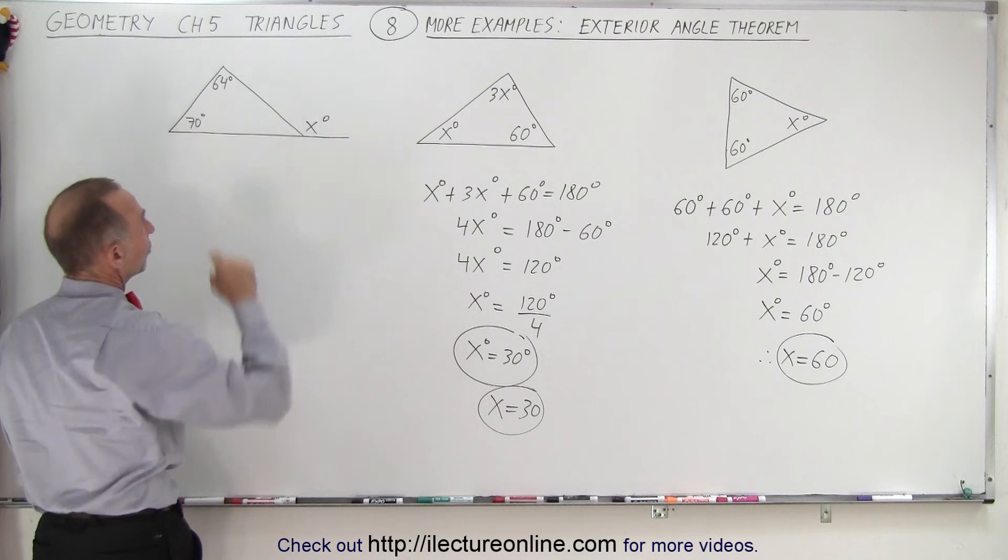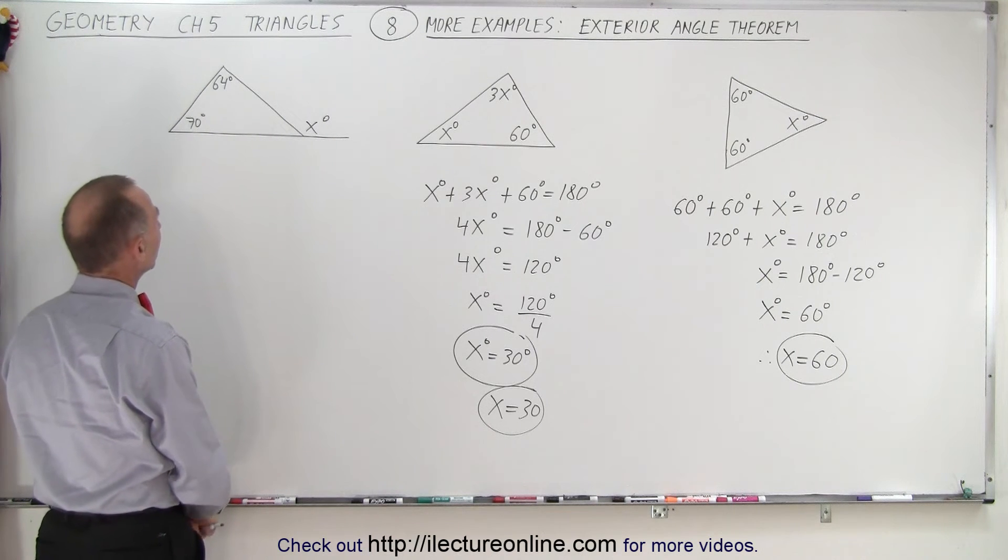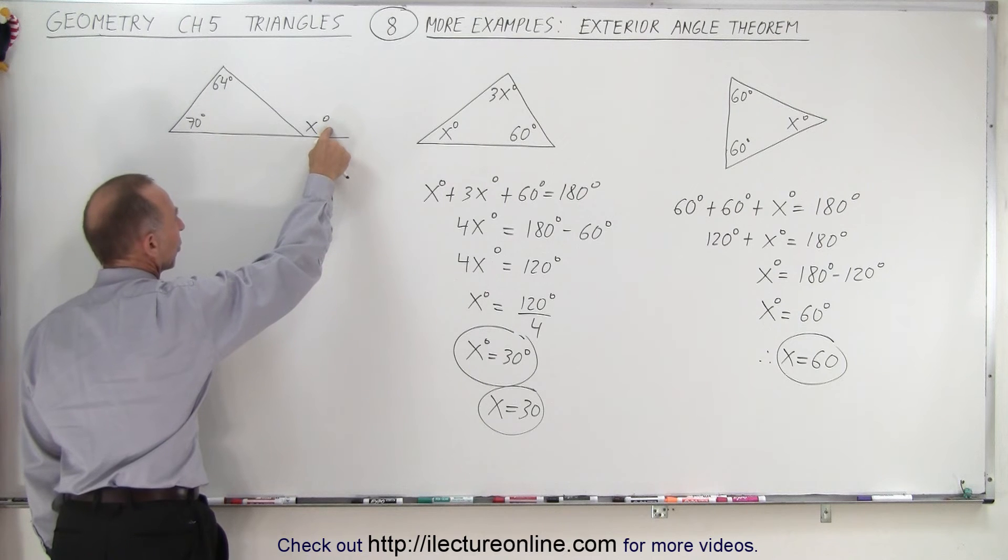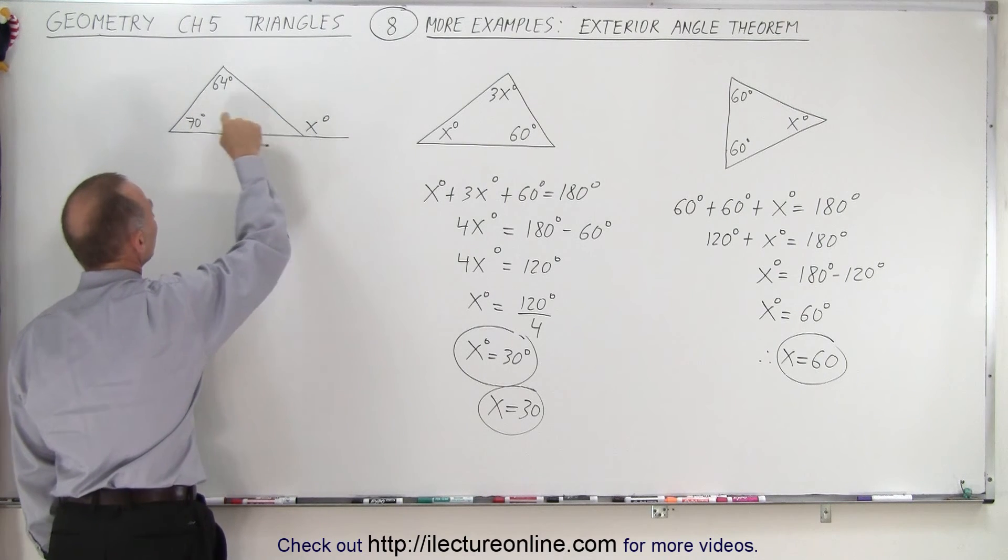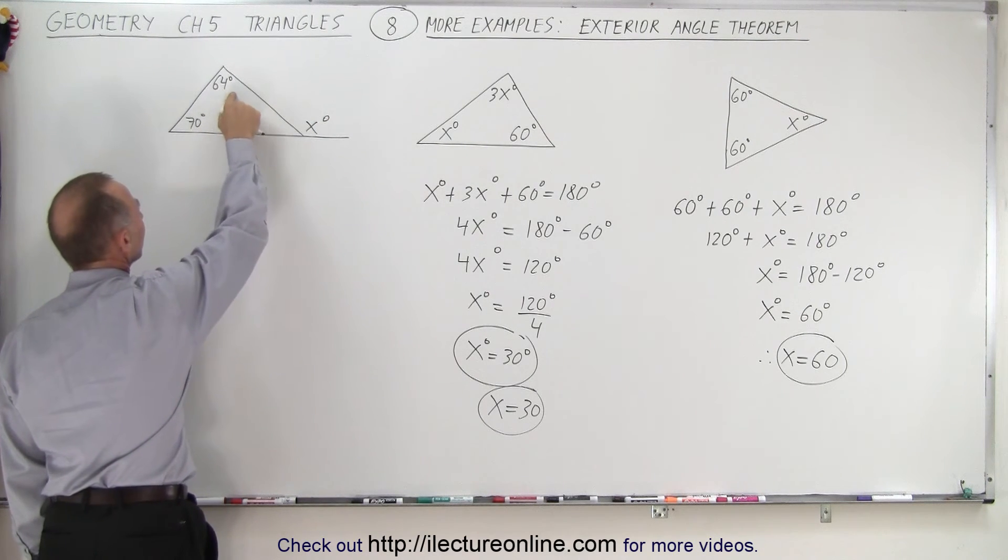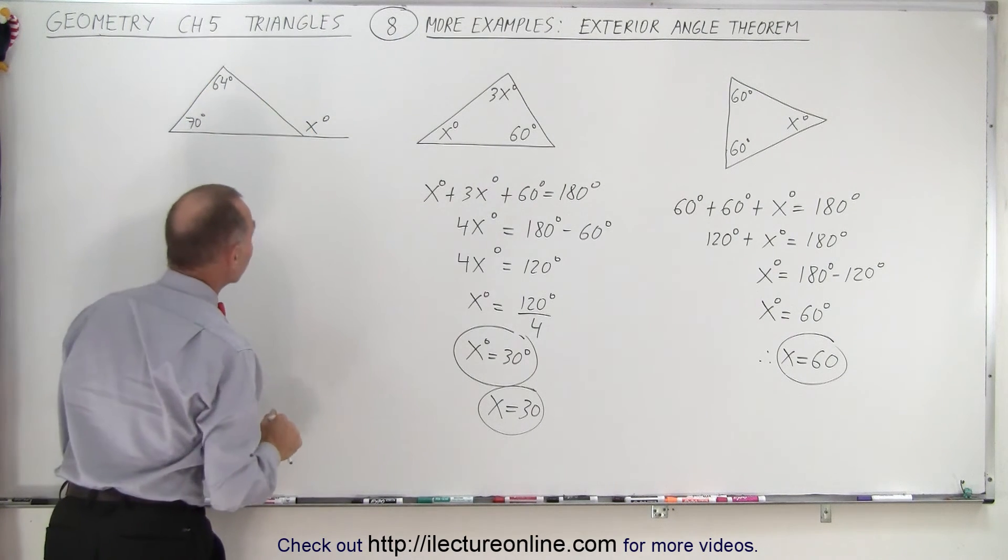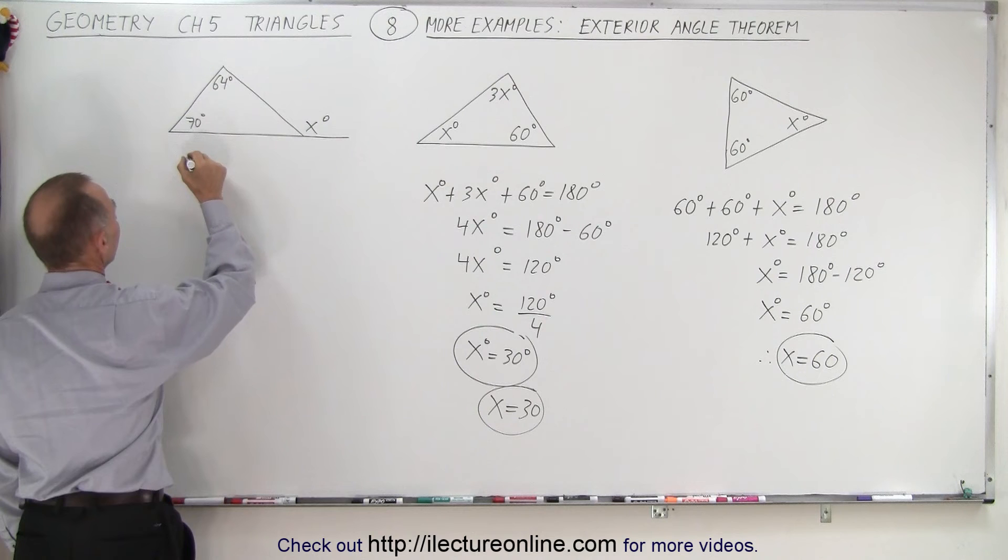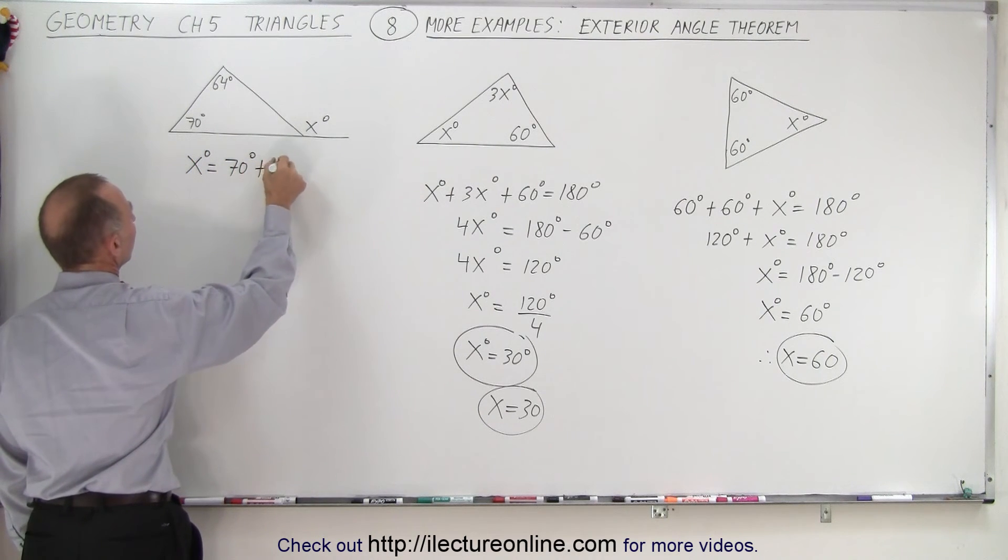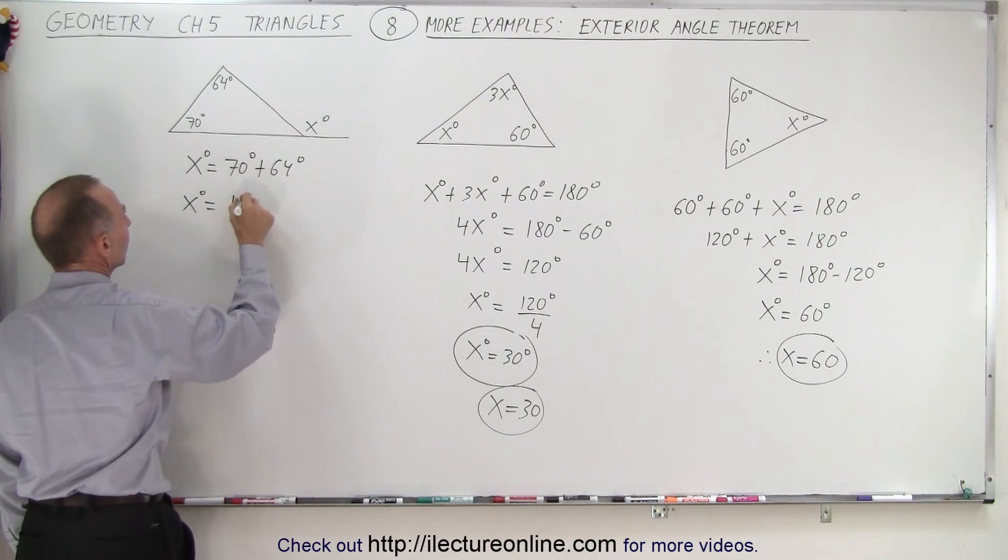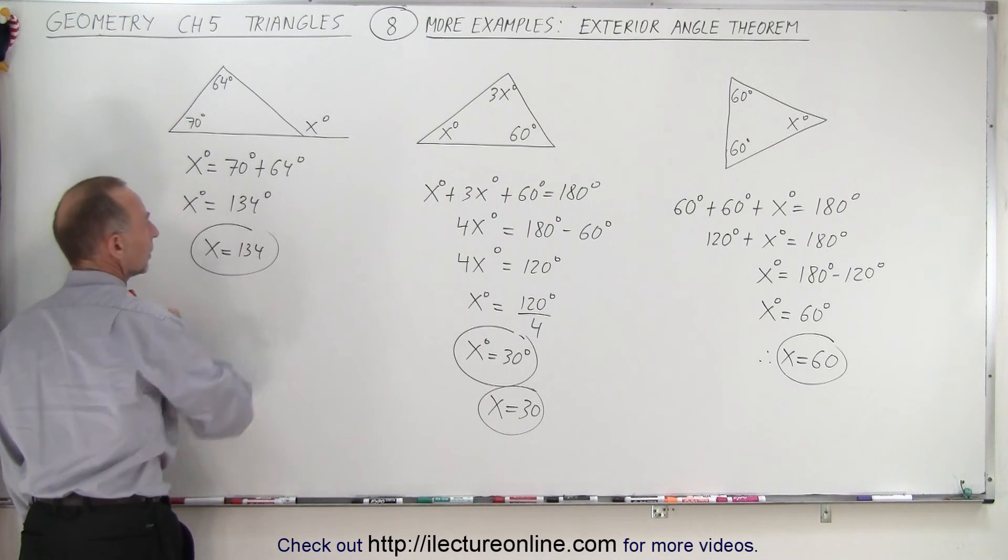Here we will need to use the exterior angle theorem. We were told that the value or the measure of the exterior angle must equal the sum of the measures of the two interior angles that are not adjacent to the exterior angle. So therefore we can say that x degrees must equal 70 degrees plus 64 degrees. In other words, x degrees is equal to 134 degrees, or x equals 134. There we go.